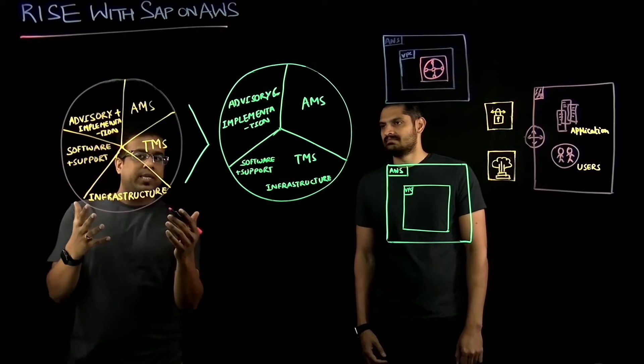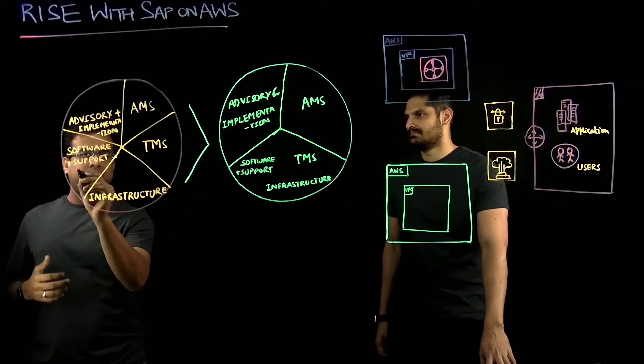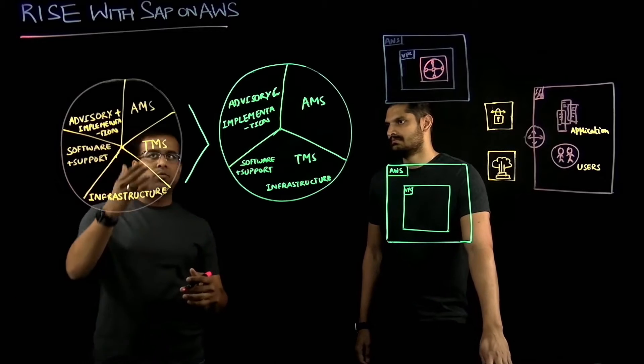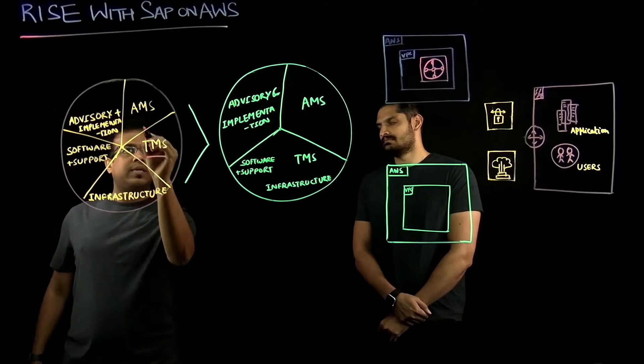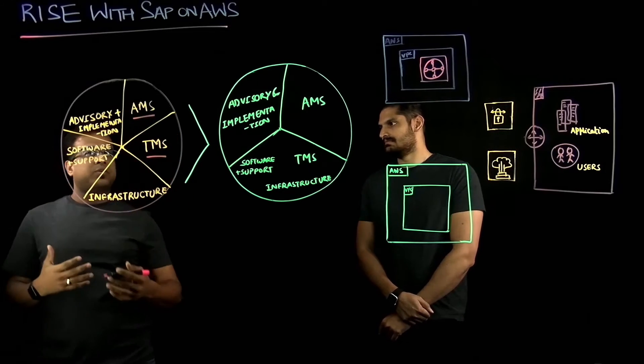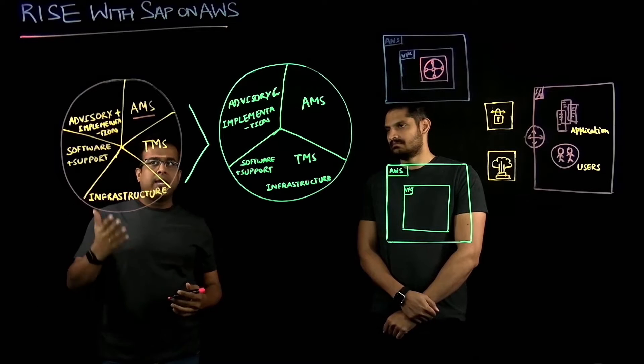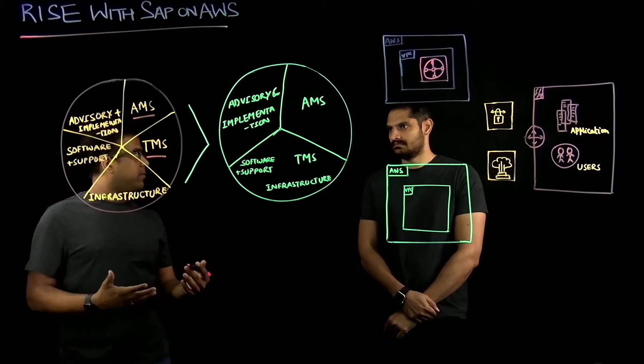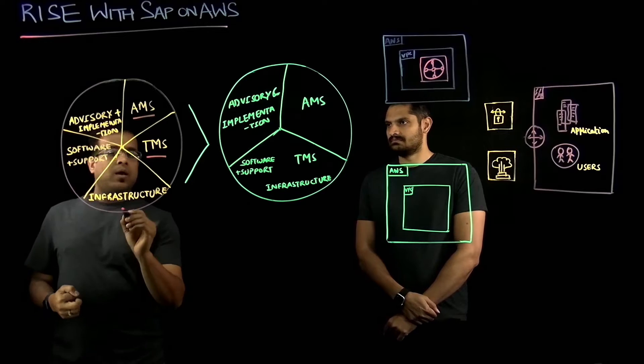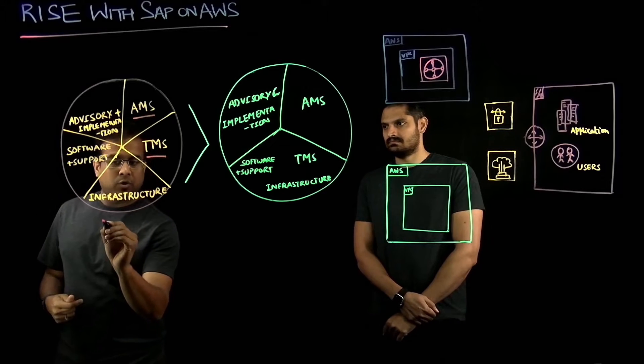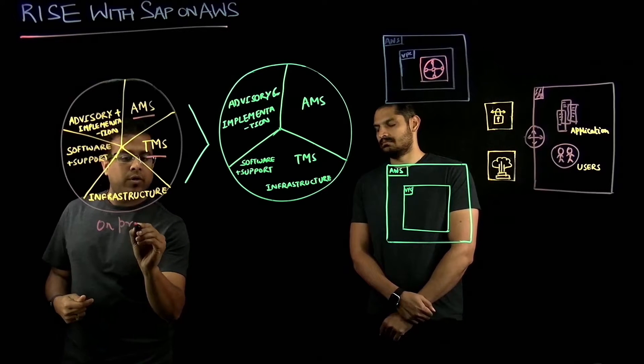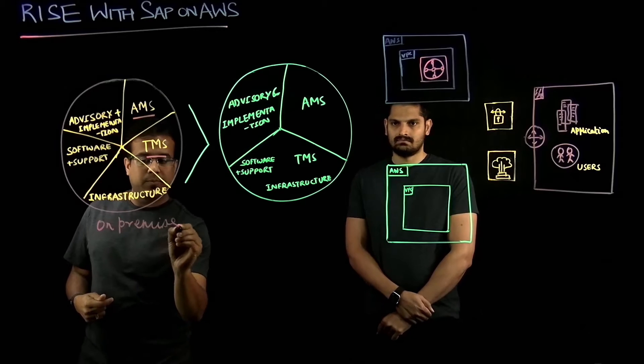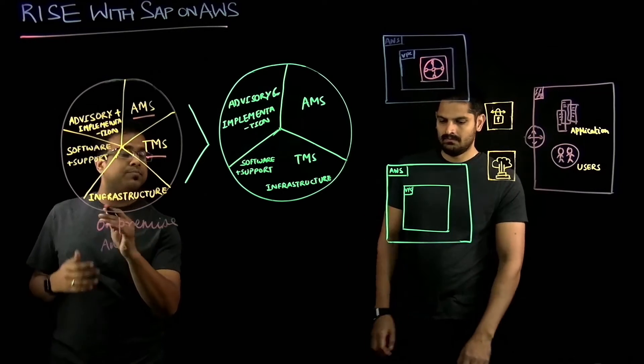So if you look at traditionally, what customers have done is they have worked with SAP for software support, they have worked with partners for TMS and AMS, they have worked with partners for advisory and implementation support. Sometimes they have their own team for AMS and TMS as well. For infrastructure, either they can rely on on-premise data centers, or they can work with hyperscalers like AWS for their infrastructure provisioning.